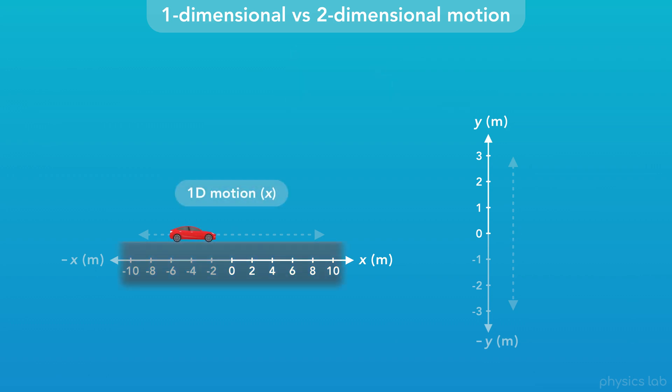If this car only moves left and right, then its motion is one-dimensional in the X direction. If this ball only moves up and down, then its motion is one-dimensional in the Y direction.